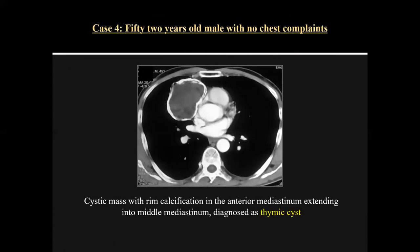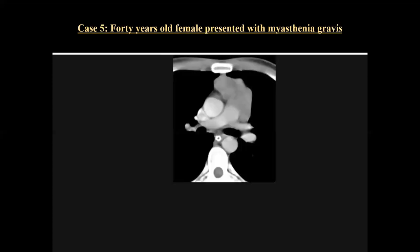Case four was a 52-year-old male with no chest complaints. On contrast CT axial scan at the level of the chest, there was a cystic mass with calcification in the anterior mediastinum extending into the middle mediastinum. This was a case of thymic cyst.